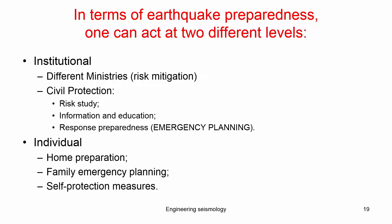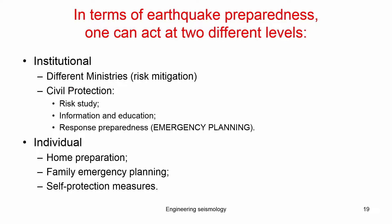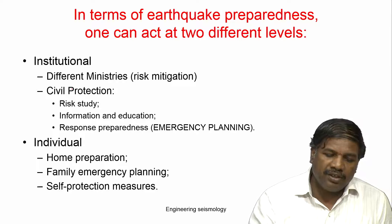All five steps can help minimize and mitigate earthquake risk, and they can be taken at two levels: the institutional level and the individual level. At the institutional level, the government plays a major role — for example, different ministries should prepare their plan of action to reduce seismic risk at the national level.